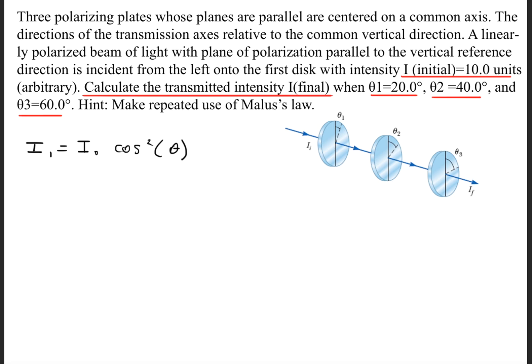I've highlighted in red the pieces of information that'll be used to solve this question. Now we'll find the first new intensity by taking the initial intensity of 10 units, and the angle will be 20 degrees, so this will give us an I₁ of 8.83.